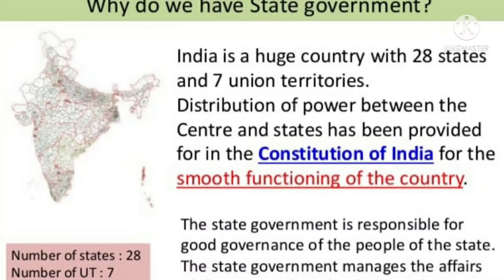The central government takes care of country-wide issues. However, local or regional issues have to be taken care of by the state-level government. For example, the central government cannot effectively manage the thousands of police stations across the country. Thus, the state government has been set up to deal with local issues. The states have their own governments.